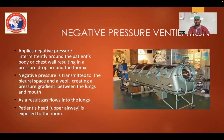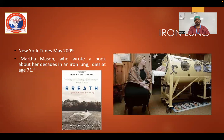Negative pressure ventilation applies negative pressure intermittently around the patient's body or chest wall, resulting in a pressure drop around the thorax. This negative pressure is transmitted to the pleural space and alveoli, creating a positive gradient between the lungs and mouth, so gas flows into the lungs while the patient's head is exposed to the room. Martha Mason wrote a book called 'Breathe' about her decades spent in an iron lung.